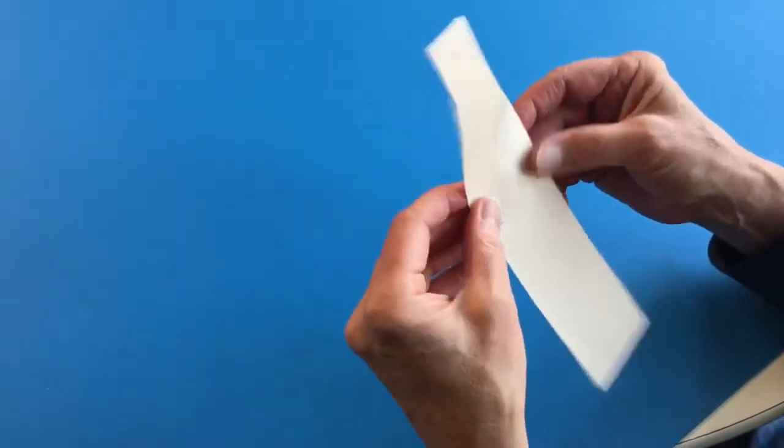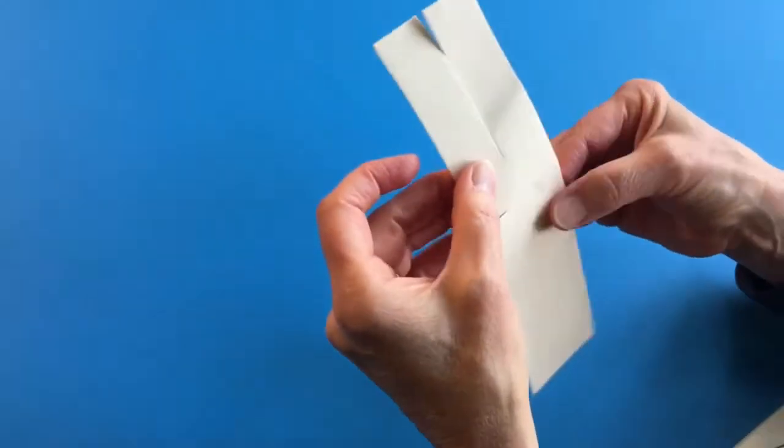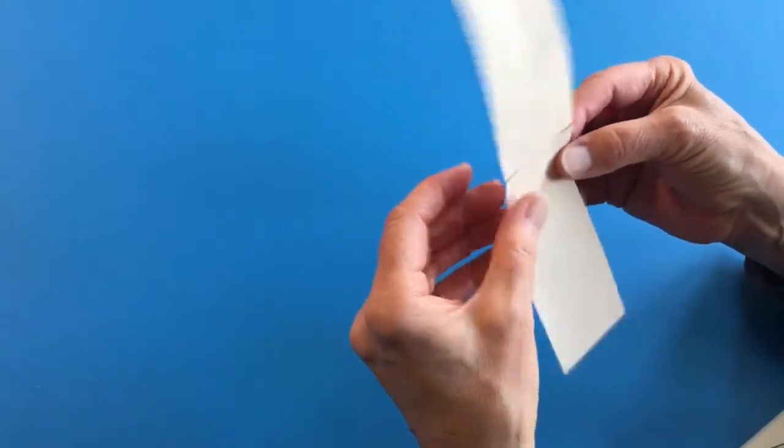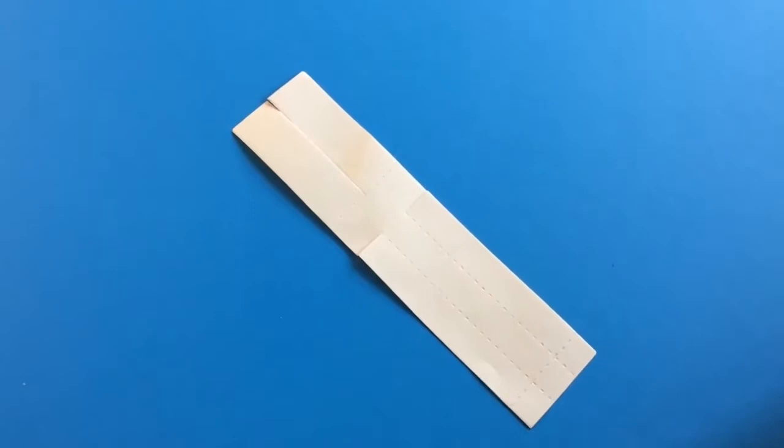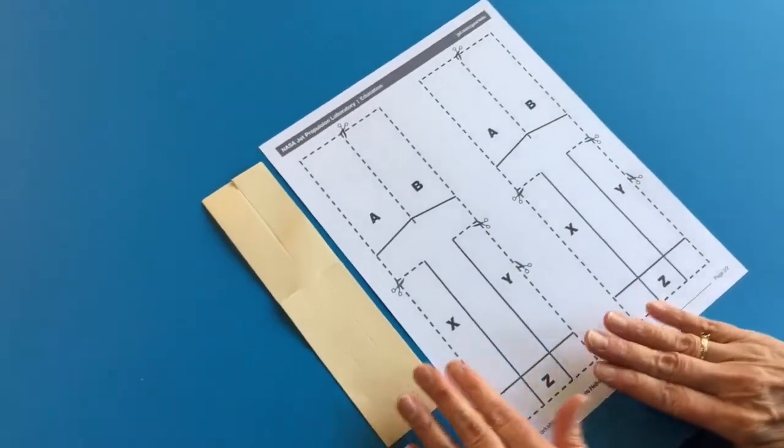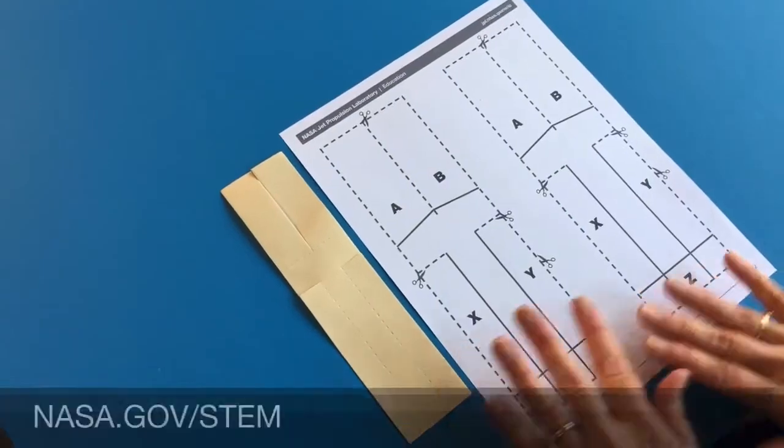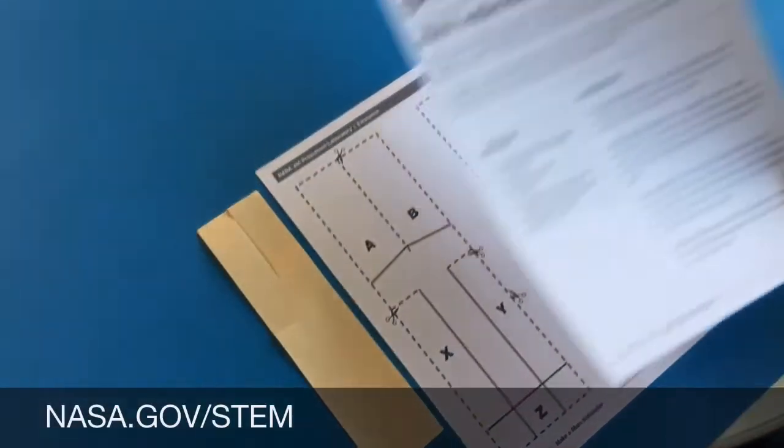Our last activity will be folding this whirligig that is in your take and make kit. Now what's fun about this is on nasa.gov there is a very similar template. I will show you the link and this is under an activity called Make a Mars Helicopter.